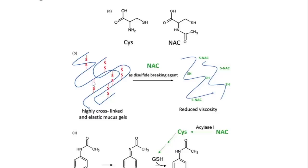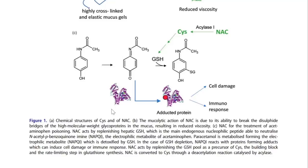NAC will break up disulfide bonds and put hydrogens on them in the reduced state so that these strands will no longer be connected. These highly cross-linked and elastic mucus gels get broken up and you get reduced viscosity — that's exactly how NAC used to be used. It used to be inhaled for people who wanted to cough up thick sputum; it was a mucolytic.